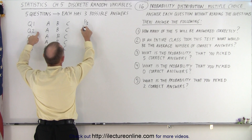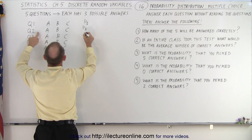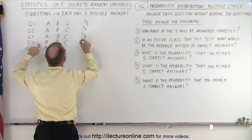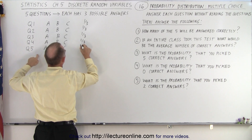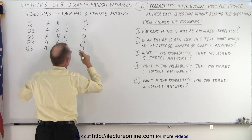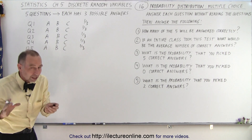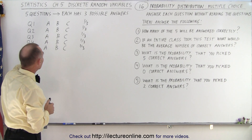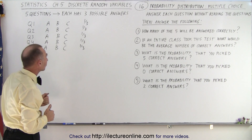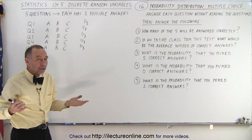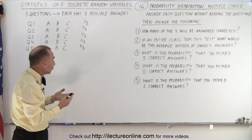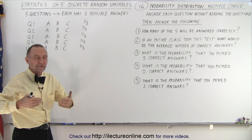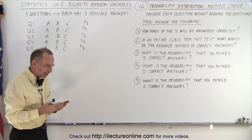Similarly, for each of the remaining questions, the probability of getting the right answer would be one out of three. So randomly picked, you only have a one out of three chance of picking the correct answer in each case. If you add them all up, that gives you five out of three — so you'd expect five out of three correct answers.